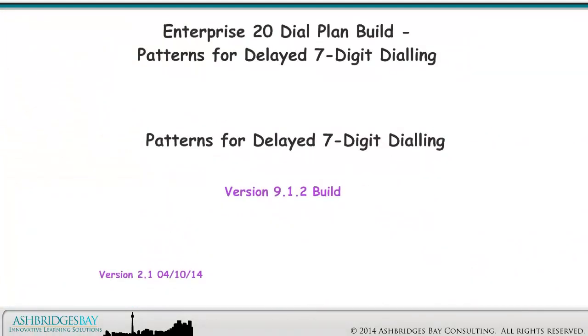In this drawing, we'll look at the patterns Enterprise 20 deploys for external dialing. We don't remove the delay for 7-digit dialing. We'll remove that delay in our No Delayed Dialing drawing.